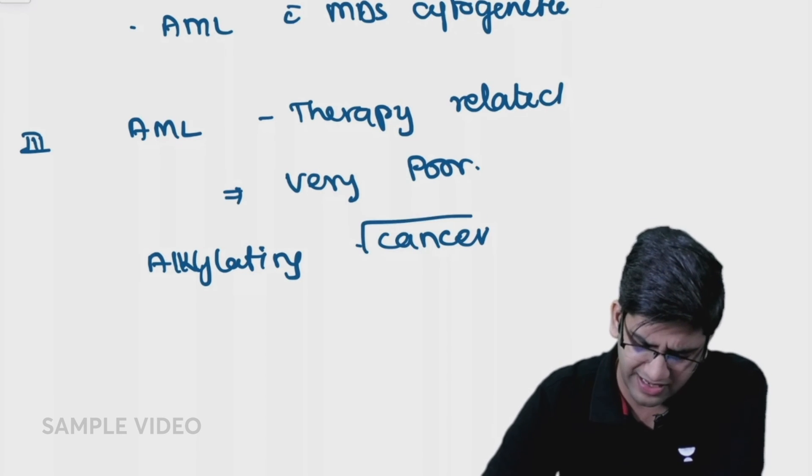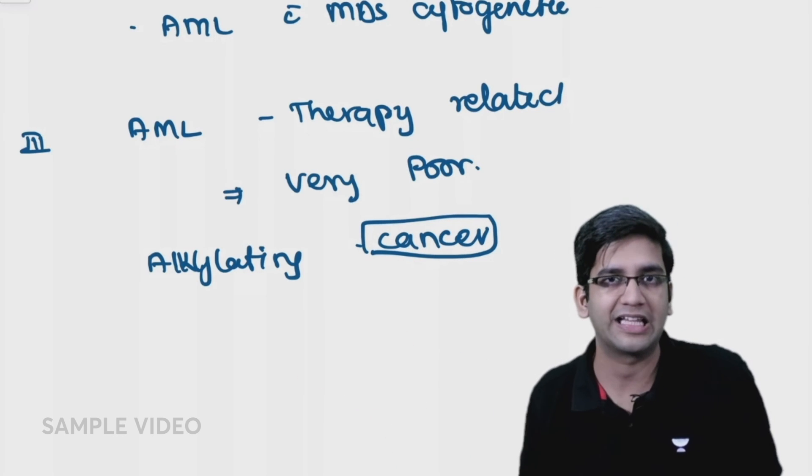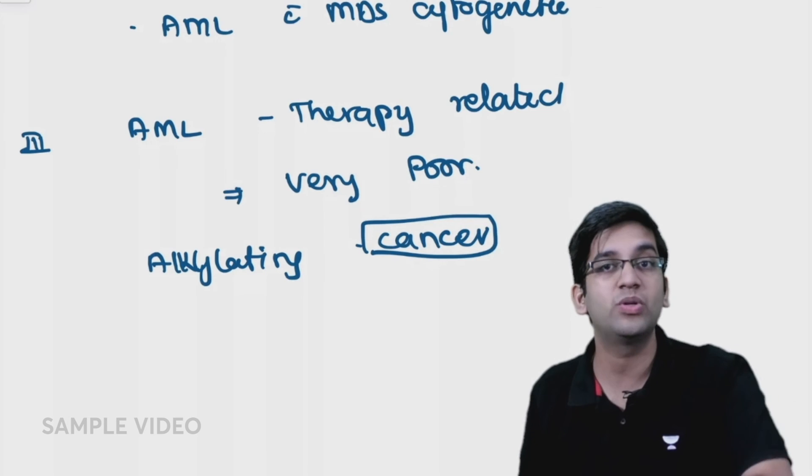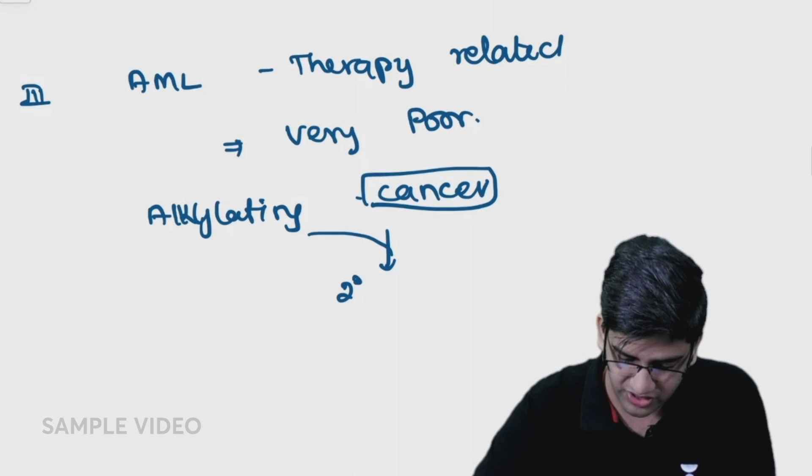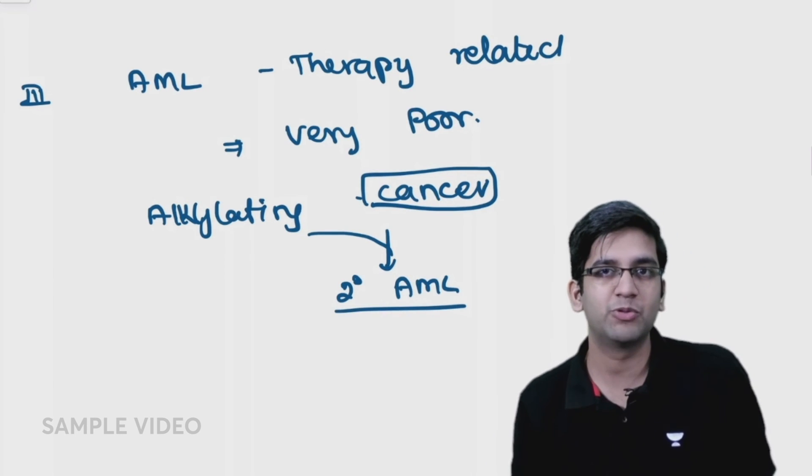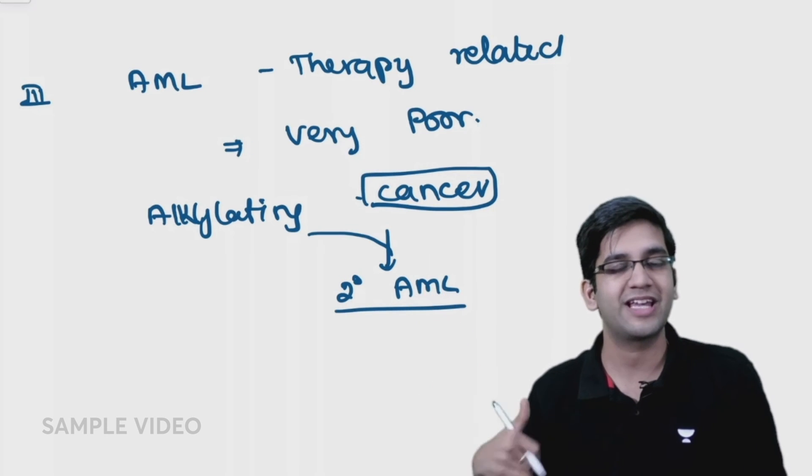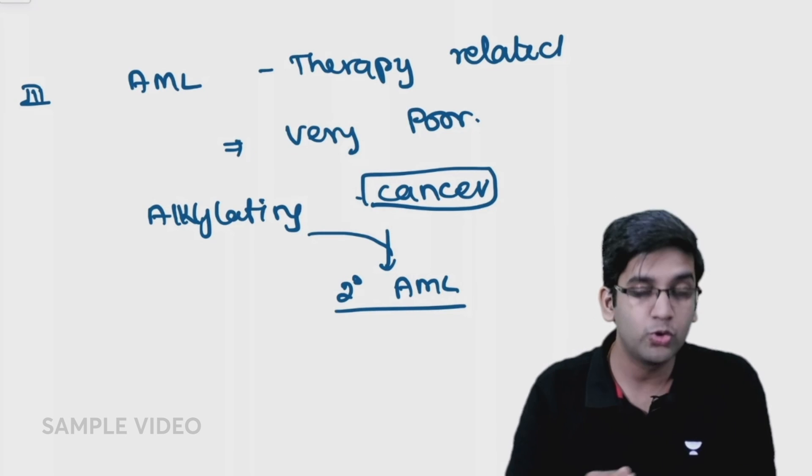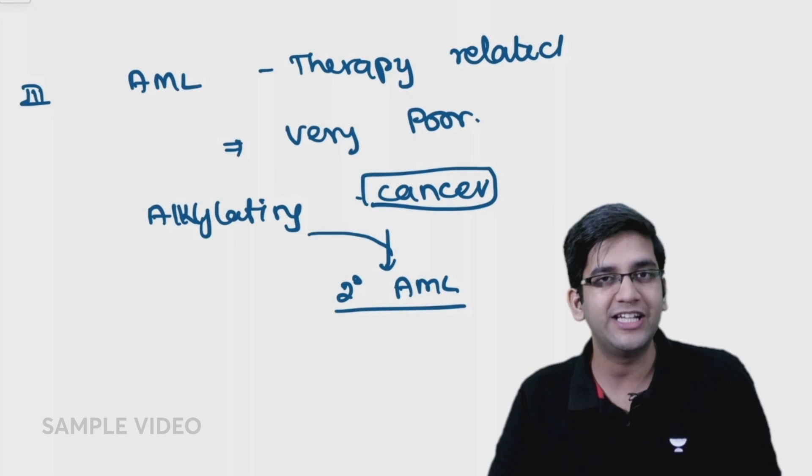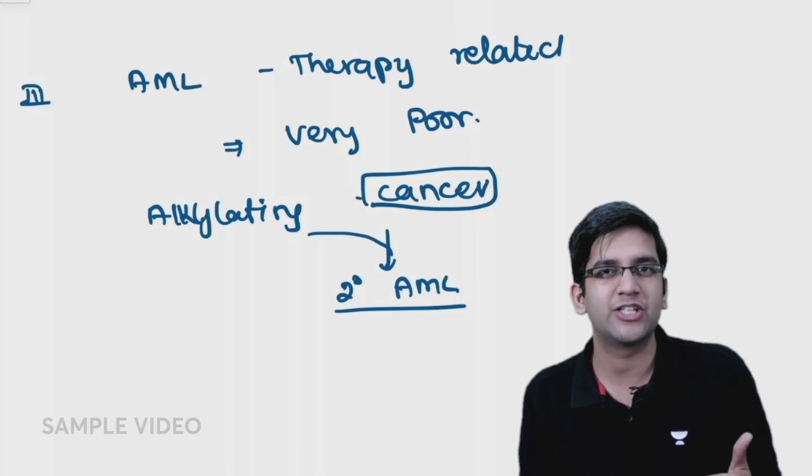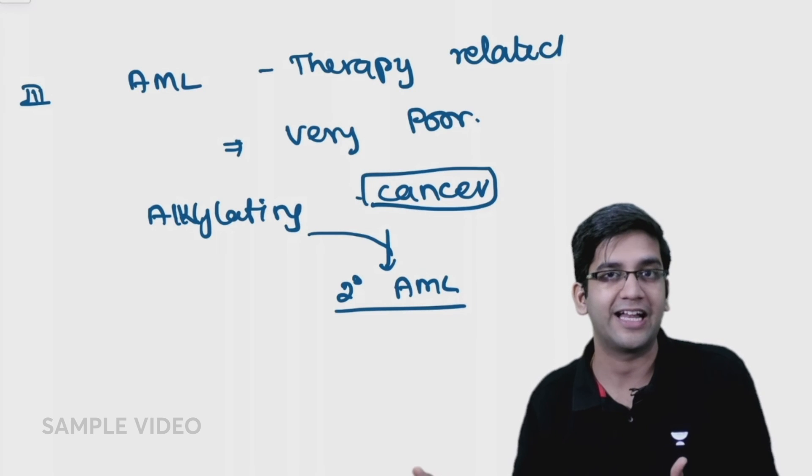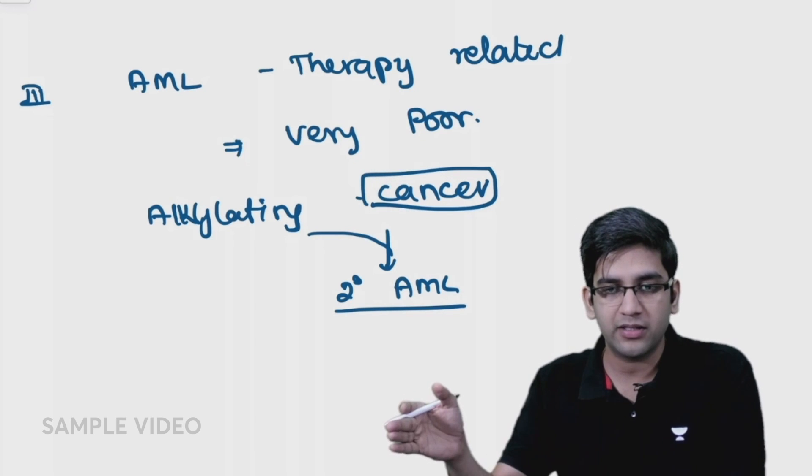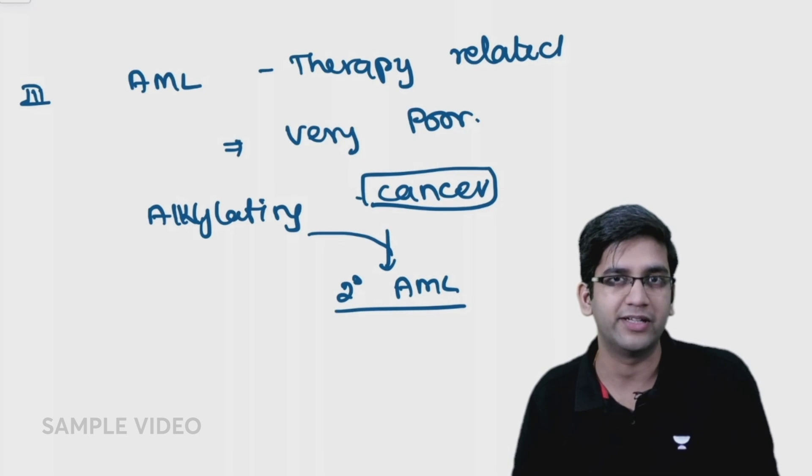Sometimes when I give alkylating agents as treatment for another cancer, that alkylating agent is causing mutation and leukemia. For example, giving 5-fluorouracil for colonic cancer can cause secondary AML. What about the prognosis? Obviously poor - the patient already has one tumor, on top of that more mutation, more tumor. I have two groups in therapy-related AML based on different latent periods.